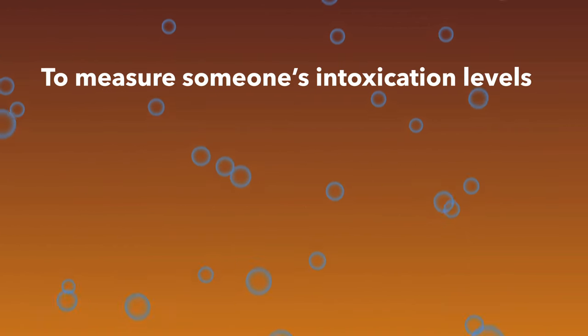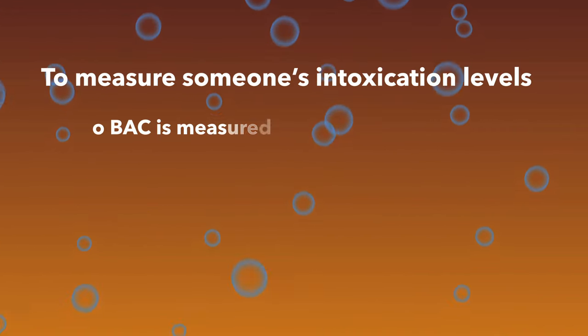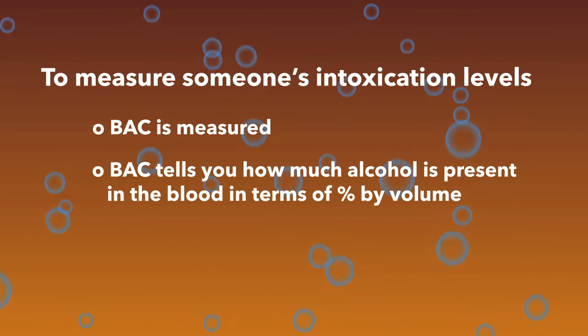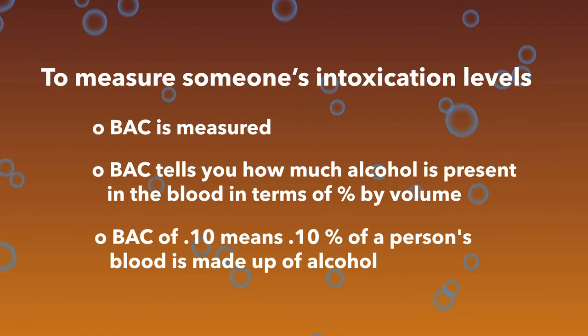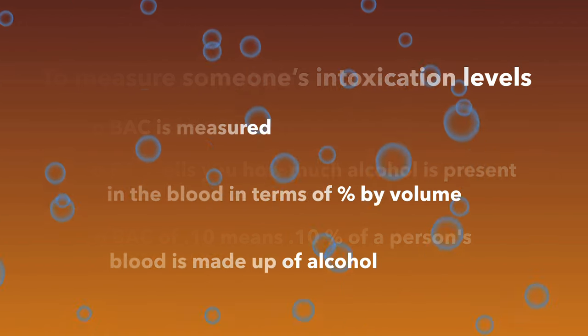To measure someone's intoxication level, their blood alcohol concentration, or BAC, is calculated. The BAC tells you how much alcohol is present in the blood in terms of percentage by volume. So a BAC of 0.10 means that 0.1% of a person's blood is made up of alcohol.